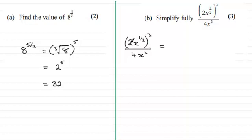What we've got is 2 to the power 3, 2 cubed and we've got then x to the power half all cubed. So when you're doing that you just multiply the 3 with the power. So that becomes x to the power 3 over 2 and all that is divided by 4x squared.